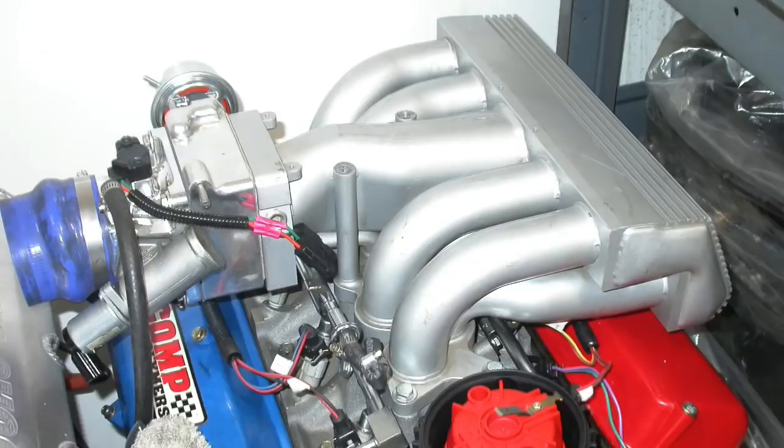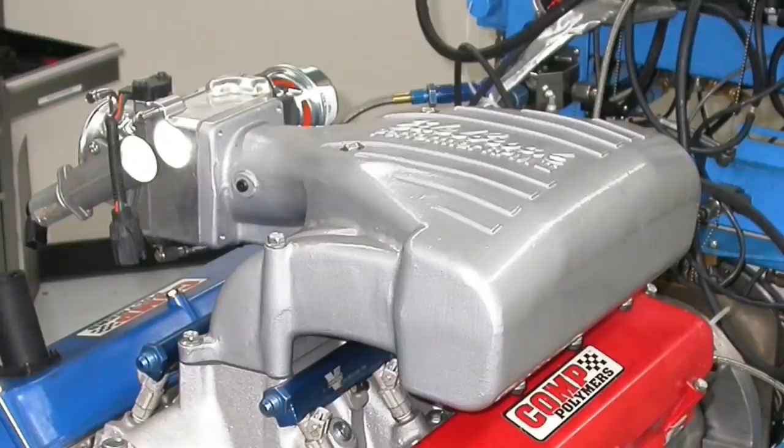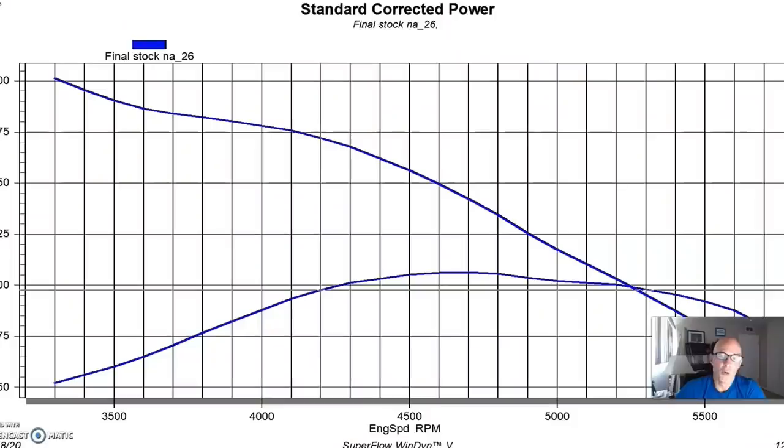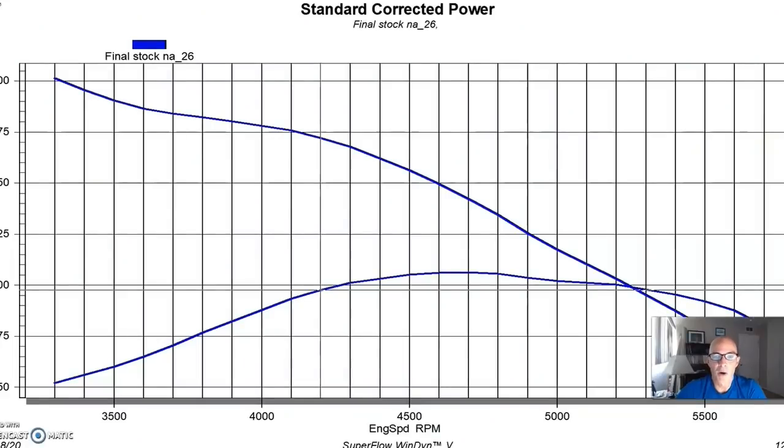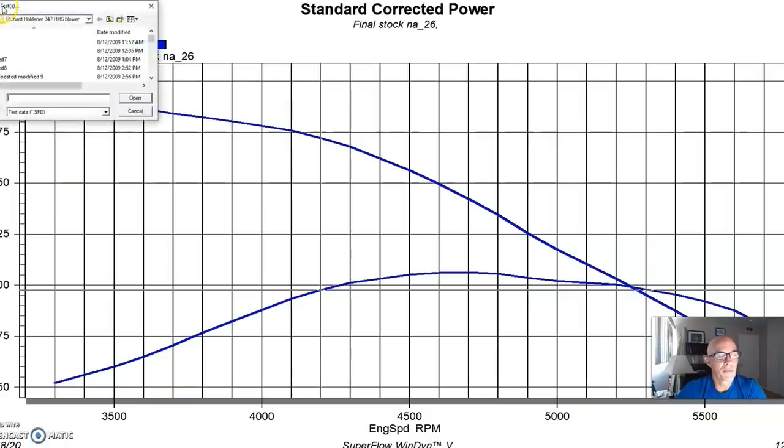We also replaced the GT40 intake with an Edelbrock RPM 2 intake, which we know is better than the GT40, and it certainly makes more power up top. But as we'll see, the combination of the heads, cam, and intake will shift power higher in the RPM range compared to the stock stuff, but that's kind of to be expected. So let's take a look and see what happened with these modifications and see how they changed the shape of the power curve.